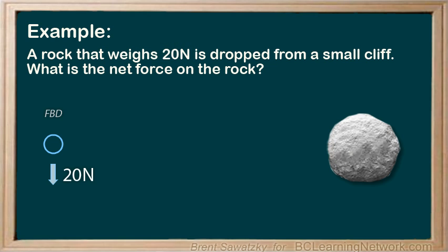So we have a free body diagram — a really simple one. In fact, there's only one force on it. Therefore, when we determine the net force, the net force is the addition of all the forces acting on the body. If there's only one force, that's the only force to add. So the net force, in this case, would simply be 20 newtons down.